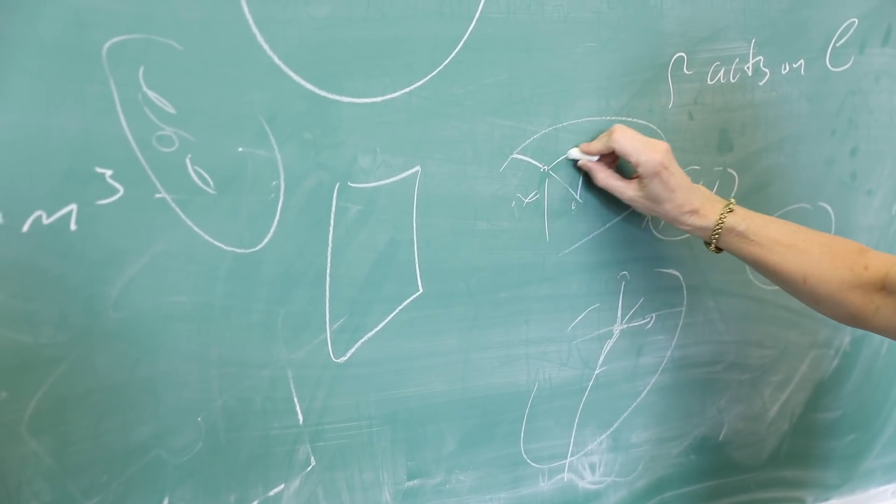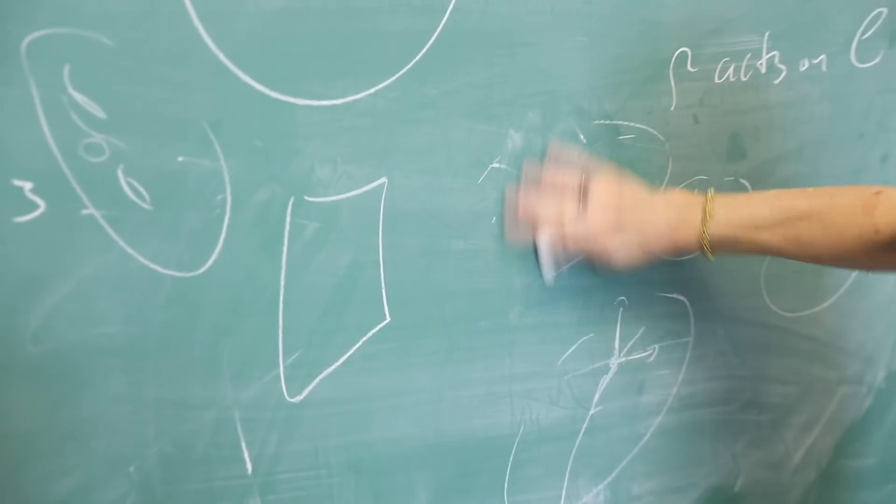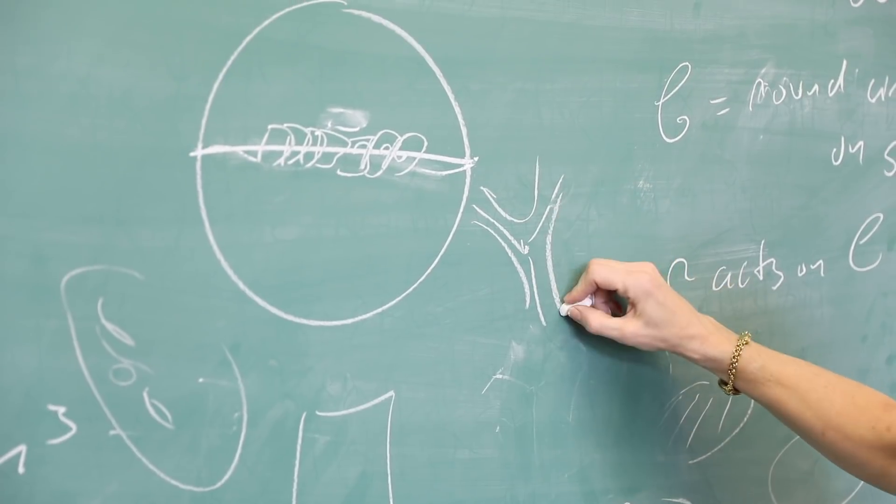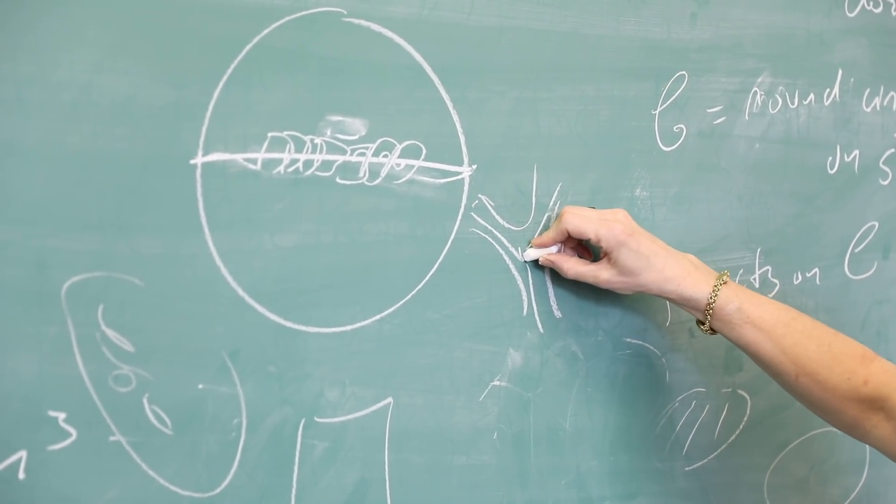In dynamics, it's not so much the theorems that we prove, it's the way of thinking about problems that's really unique. Because we're always thinking in terms of: what happens when you set this in motion? How does this come to be? How did this situation, this potentially static situation, arise from some kind of dynamical process? What was that process? What are the traces of the dynamical process that you can see in this scenario that's in front of you?